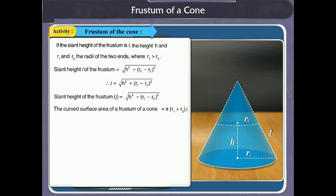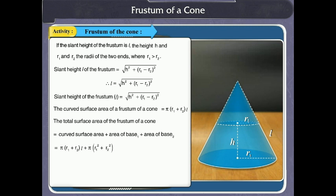The total surface area of the frustum of the cone is equal to π into bracket r1 plus r2 into l plus π r1 squared plus π r2 squared. Here you must have noticed that the total surface area is the sum of the curved surface area and the area of the two bases.